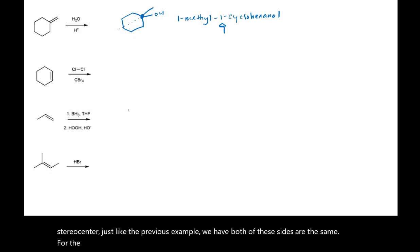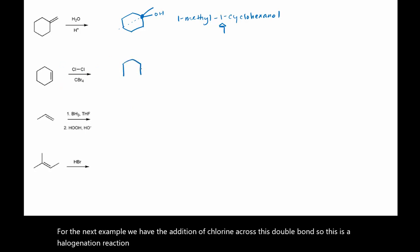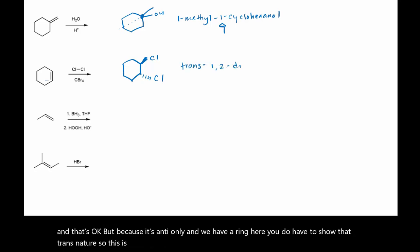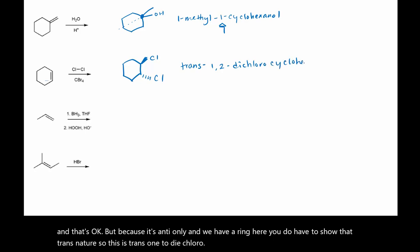For the next example, we have the addition of chlorine across this double bond. So this is a halogenation reaction. It adds anti-only and there is no rearrangement. Because it's anti-only and we have a ring here, you do have to show that trans nature. So this is trans-1,2-dichlorocyclohexane.